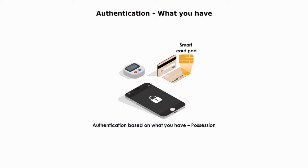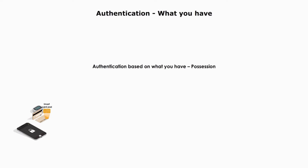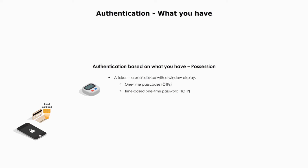The second common authentication method is based on what you have — possession — like a token. A token is a small device with a window display showing one-time passcodes (OTPs), or time-based one-time passwords (TOTP). Both OTPs and TOTP are valid for a short time, like 30 seconds or 60 seconds. They are normally used when we log onto a website with your password.